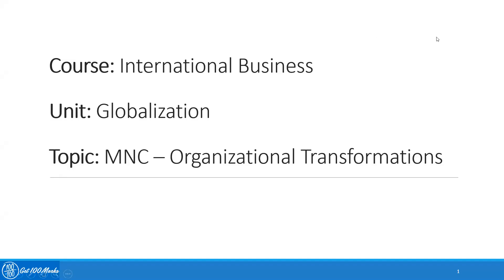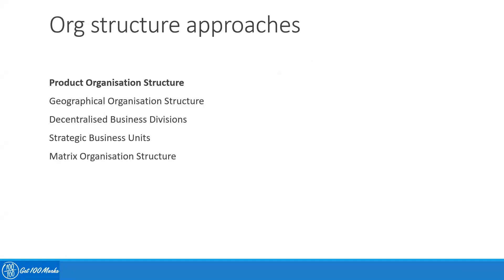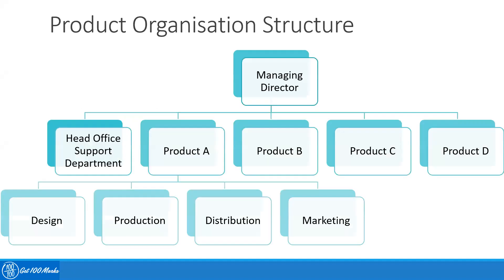Now we'll talk about MNCs from an organizational point of view. There are different approaches which are followed in a multinational company, and we'll talk about each of these approaches individually. The first is a product organization structure. This is a sample of a product-based organization structure where typically there is a managing director at the top with some head office support departments reporting to him.